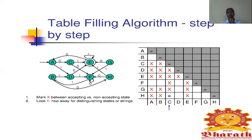Now we pair all states with state C. Note that A,C and B,C are already covered — we do not consider them again. And C,C is obviously equal. So we start with the new pairs involving C: C,D is next.